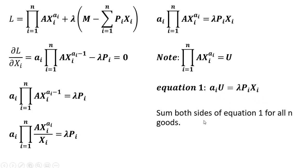The next step is we're going to sum both sides of equation 1, the left-hand and right-hand side for all n goods. So doing that leaves us with this result here. Again, summing both sides of equation 1 for all n goods.